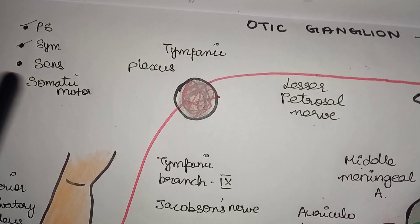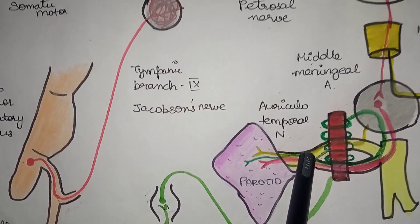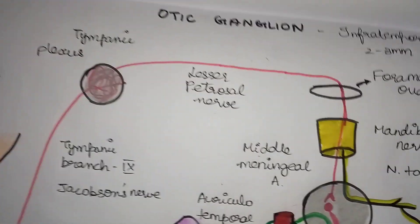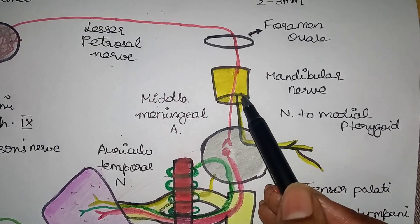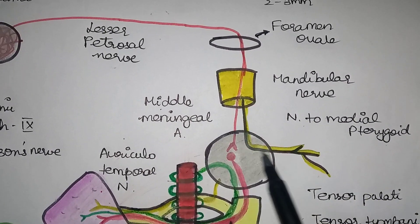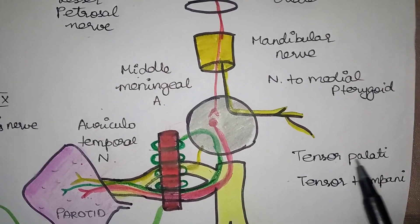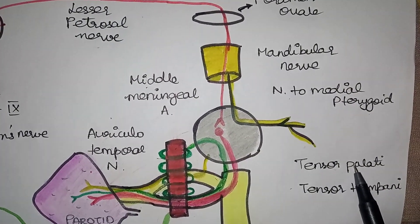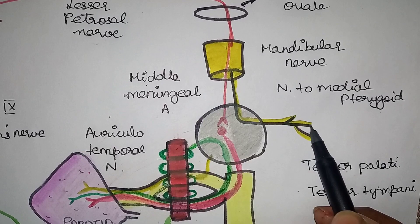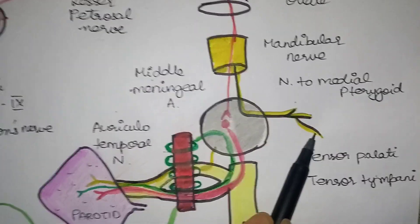The sensory supply is via the auriculotemporal nerve. The somatic motor component also arises from the mandibular nerve, passing through the otic ganglion without forming a relay. It supplies three muscles: the tensor palati muscle, the tensor tympani muscle, and the nerve to the medial pterygoid muscle.